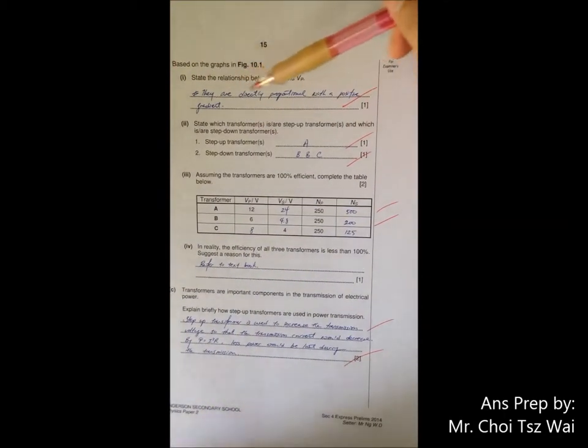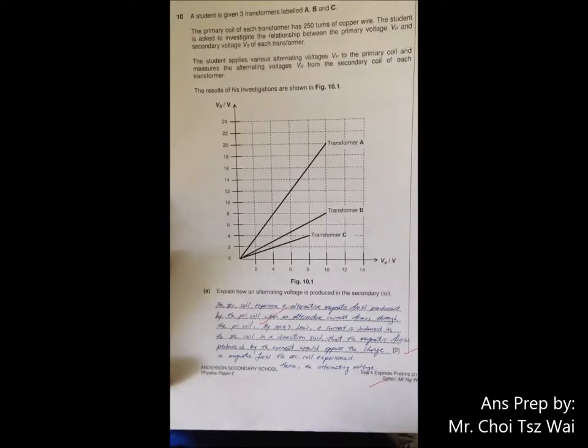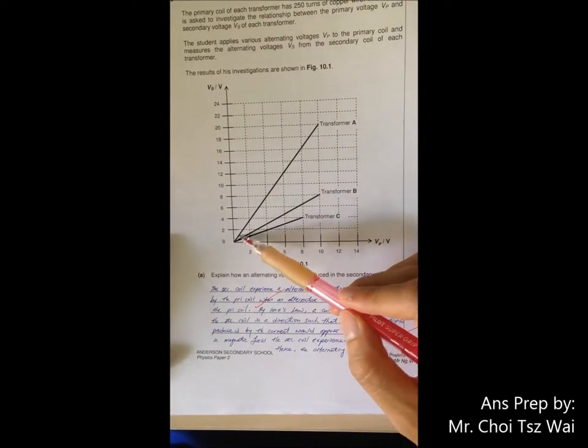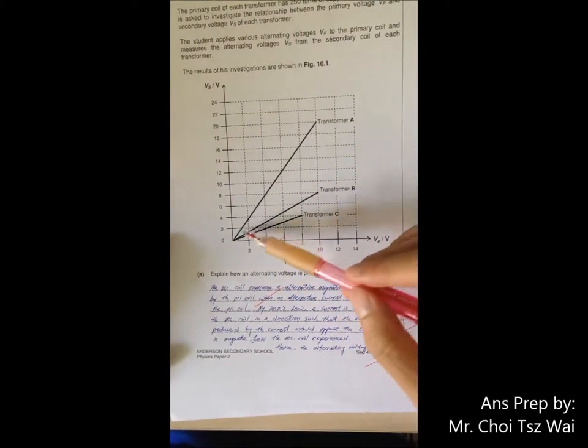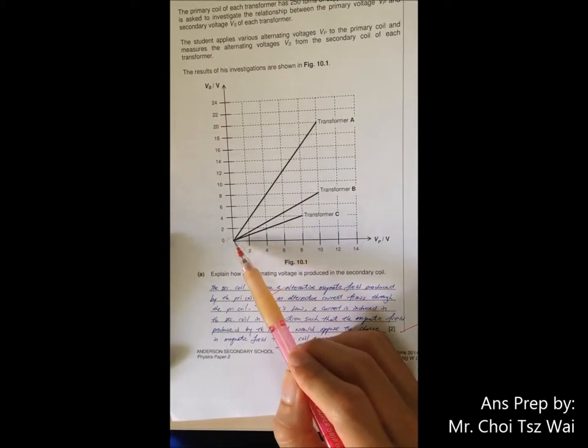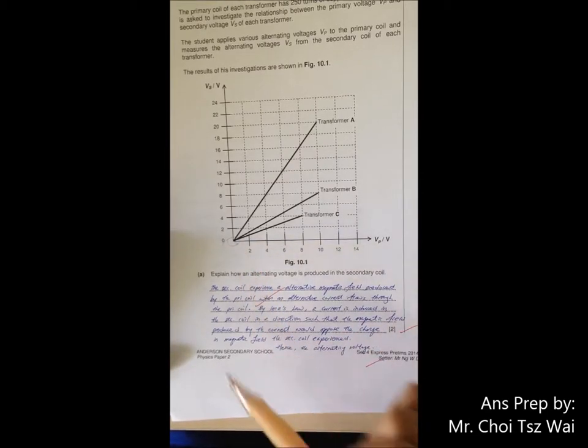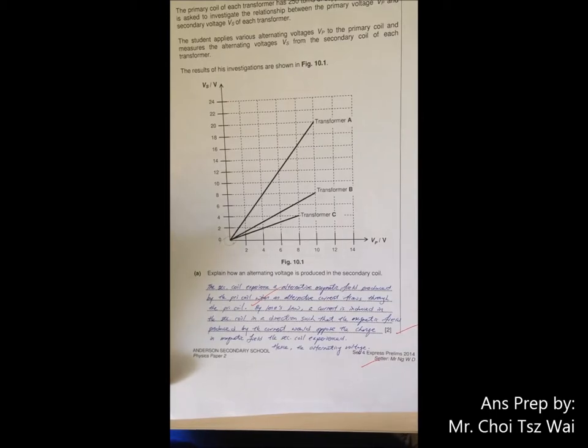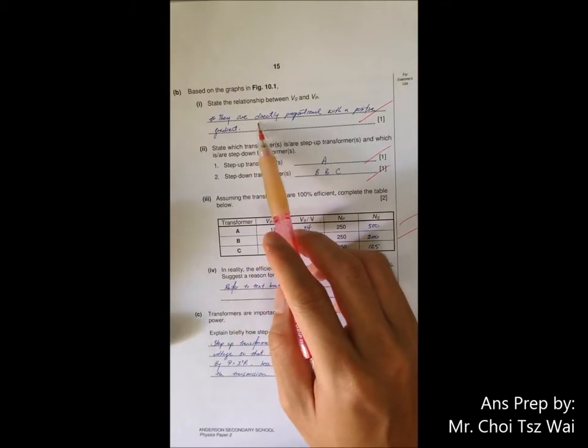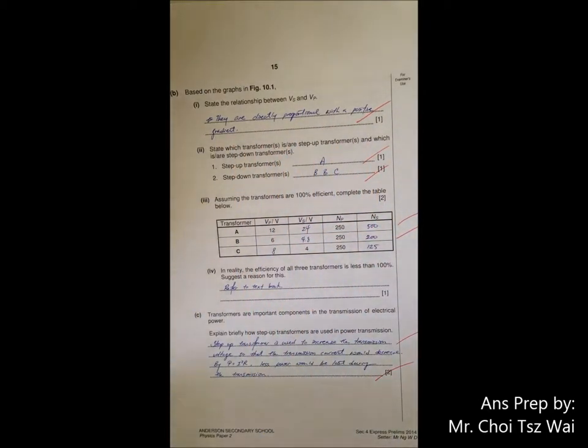Part I. When you are using directly proportional, there are two criteria to meet. Number one, it has to be a linear line, meaning that the gradient is uniform. Number two is that it must begin with the origin. It has to start with zero zero. Then it qualifies for directly proportional. So down here, just for completion's sake, it is directly proportional and the gradient is positive. So just add a few words.